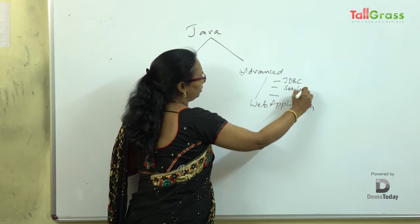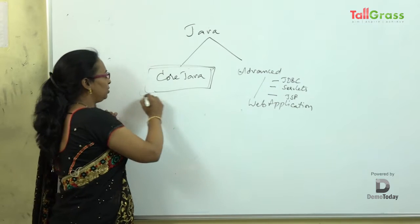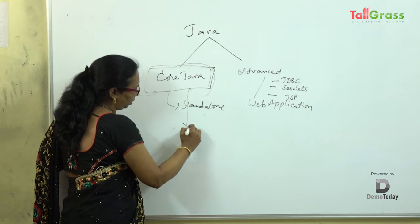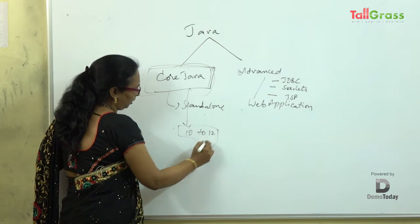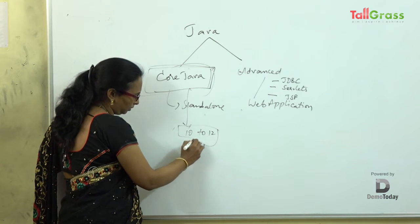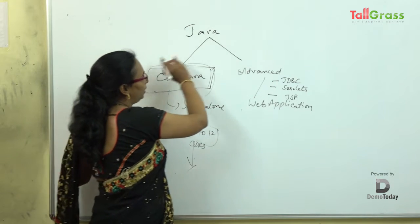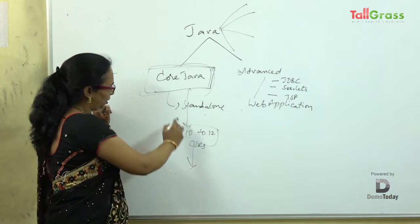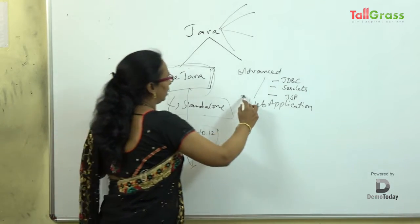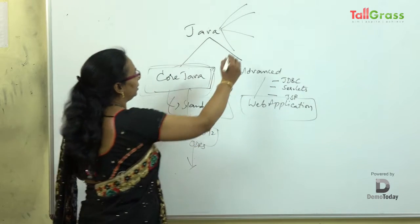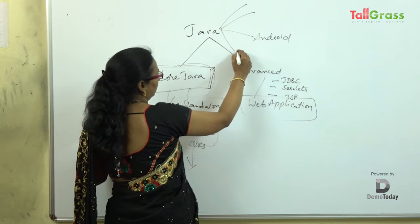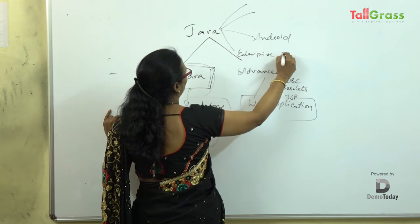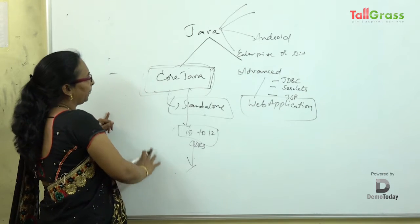Those who learn core Java will be able to develop standalone applications. We will be going with around 10 to 12 chapters covering OOP concepts and other topics. In Java, whoever learns it can develop basically four types of applications: standalone applications, web applications, Android applications, and enterprise or distributed applications.